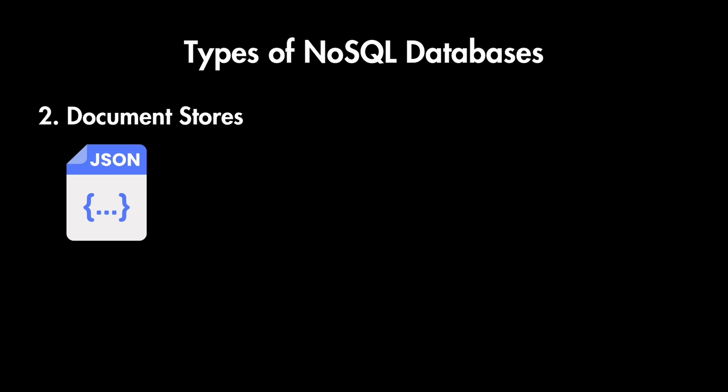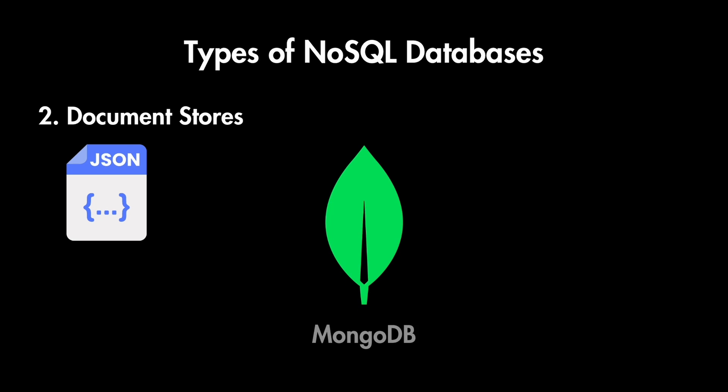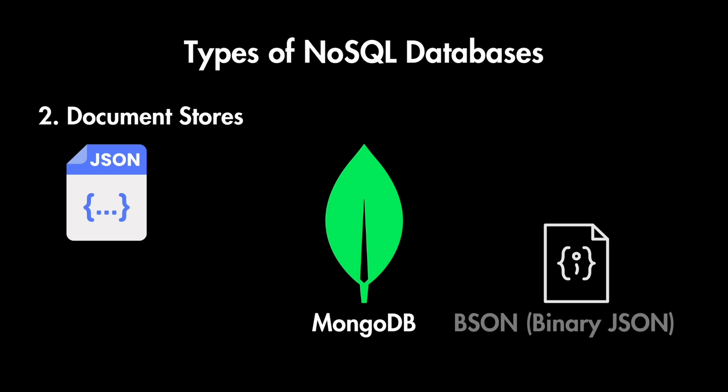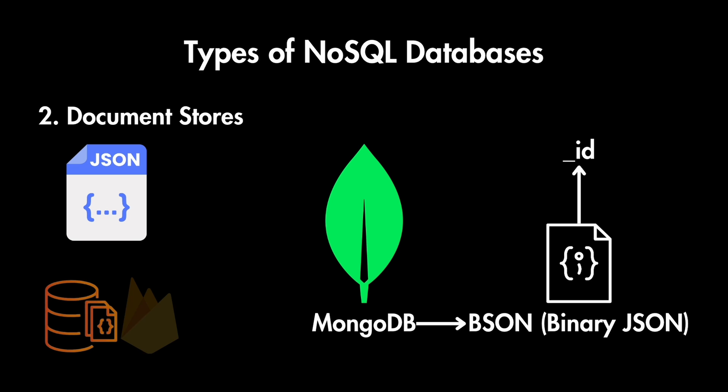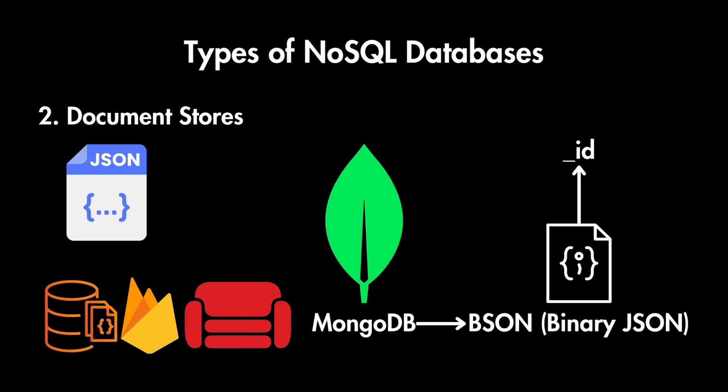The next type is document stores. Data is stored as JSON-like documents, which allows us to have complex data structures within a single record. The most popular example is MongoDB, and it internally stores data as BSON — binary JSON — which is faster compared to JSON itself when querying. Document stores also have some type of primary key that helps identify each document, but there is no schema and no rigid table structure, and fields can vary from document to document. Related data is often stored together within the same document, improving read performance for common queries. Other examples include AWS DocumentDB, Firestore in GCP, and CouchDB.